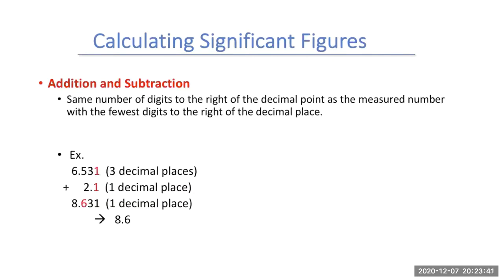For addition and subtraction, we round to the fewest digits after the decimal point. For example, 6.531 plus 2.1: my first number has three digits after the decimal point, but my second number only has one, which means my answer will only have one number after the decimal point. When you add them, you get 8.631, which when adjusted for significant figures gives 8.6 — that's our final answer. Remember: if you don't have a decimal point, your answer will not have a number after the decimal point.